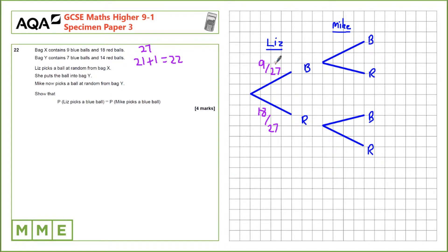Next, in the case that Liz picked a blue ball, she's going to add that to bag Y so there will be 8 blue balls for Mike to pick from out of a total of 22. And the corresponding probability for red is 14 over 22 that are left.